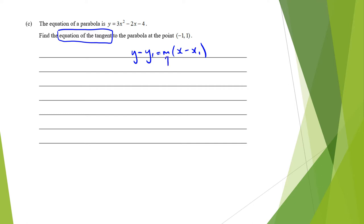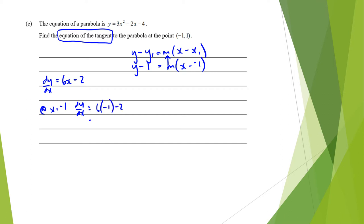We need our gradient. We have y minus 1 equals m times (x minus negative 1). To find the gradient, we differentiate, which gives us 6x minus 2. At x equals negative 1, dy/dx is 6 times negative 1 minus 2, which is negative 8. That is our gradient.